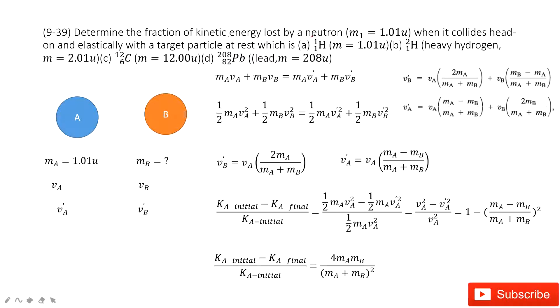Okay, we can consider this neutron, this particle, as object A. This target particle, we can consider it as object B. So it looks like there is an elastic collision between A and B.